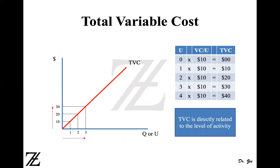In a variable cost, we first have a total variable cost. As you can see in my graph, the graph is upward sloping. If you are producing one unit, the total variable cost is $10. If you are producing two units, the total cost is $20. Three units, the total cost is $30. That can also be seen on the table on the right-hand side. If you don't produce anything, which is the origin, it costs you nothing. Basically, total variable cost is the quantity times variable cost per unit.